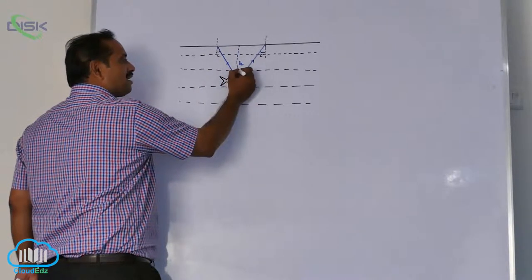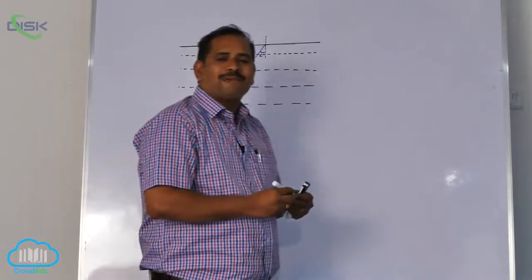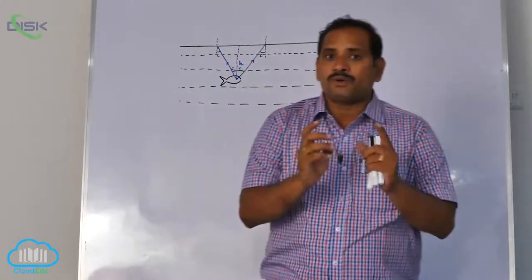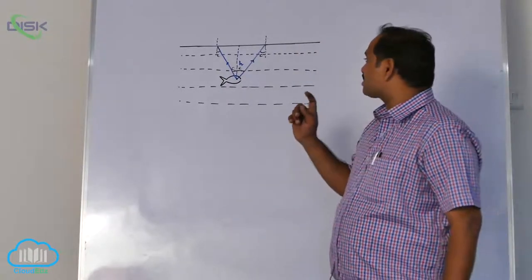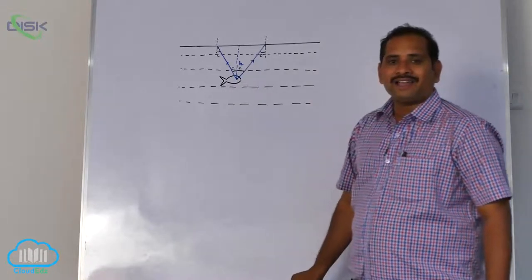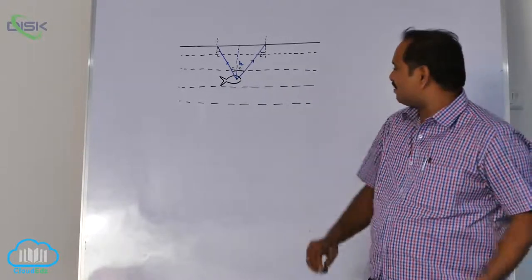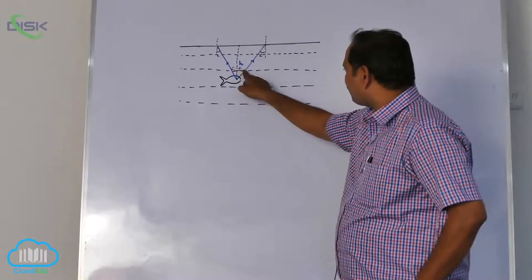One more question they can ask you like this. What is the apex angle of the cone up to which it can observe the outside world? Most students say C. It is wrong. 2C is the angle it can visualize outside the world. Apex angle is 2C. Apex means this cone complete angle 2C.